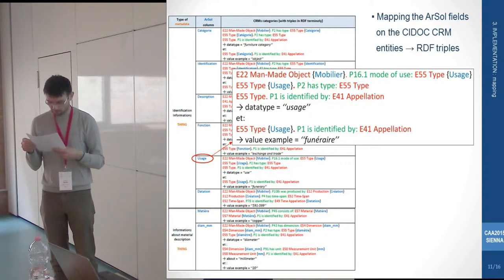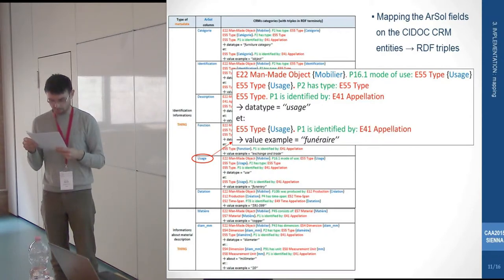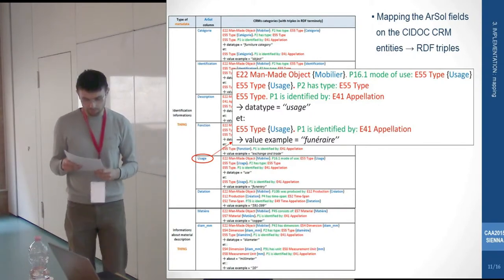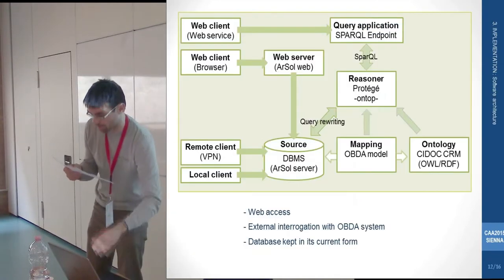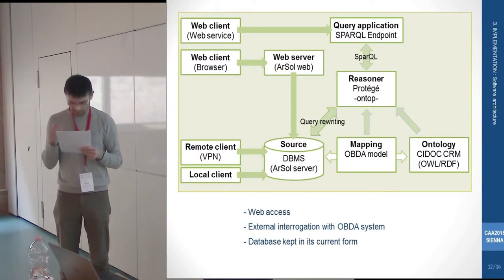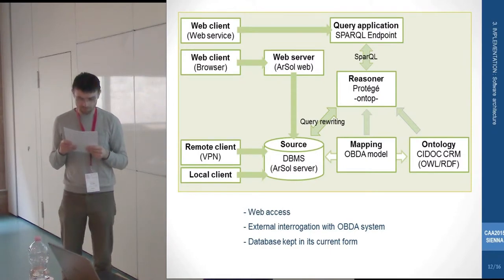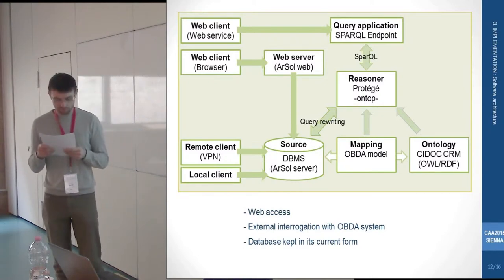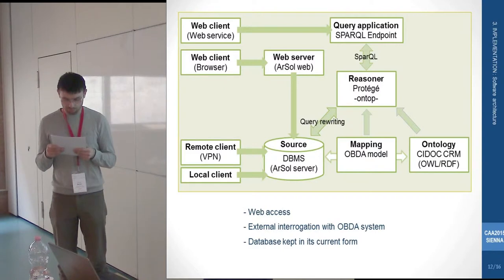That field is collected in the mapping using a SQL query in the database. The whole file with these triples constitutes the mapping file. Of course, for each database with a specific structure, a different mapping is required. To enable the ontology to communicate with the database using a mapping, we chose to use OBDA systems — Ontology-Based Data Access — recently introduced in the semantic web, which suits our needs. With this layer, the ontology is the access point to query the data, while the information remains in the databases used by the researchers.